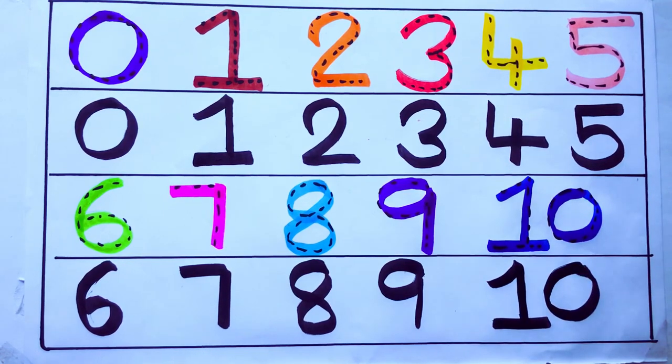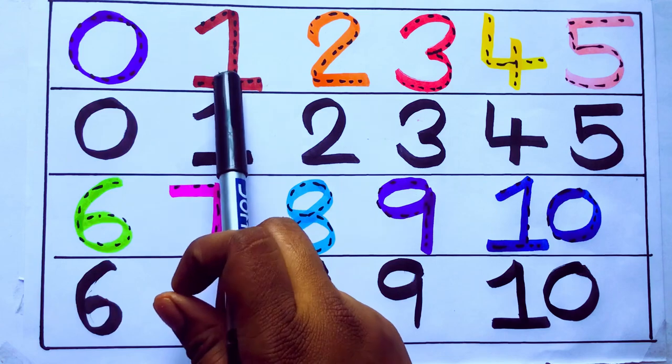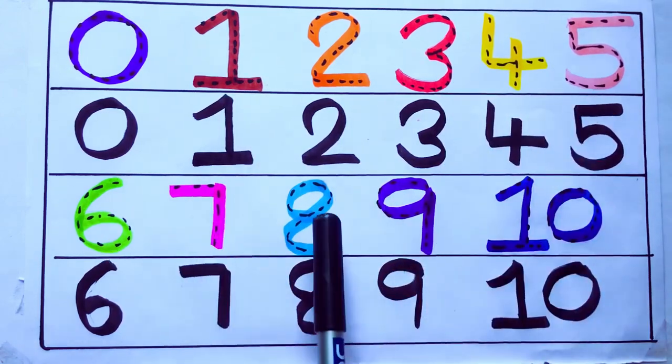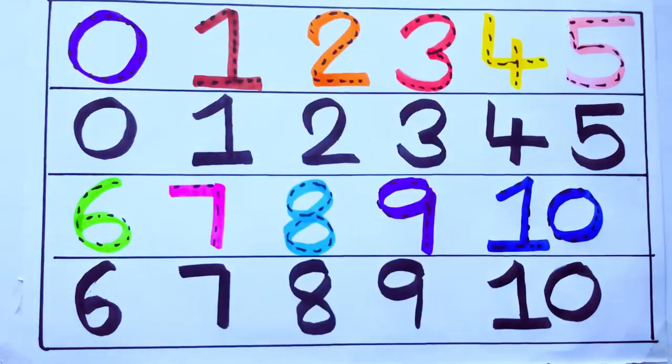Let's review learning numbers: 0, 1, 2, 3, 4, 5, 6, 7, 8, 9, 10. Okay, bye kids.